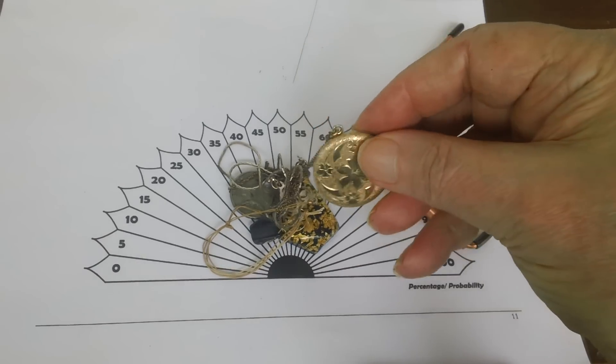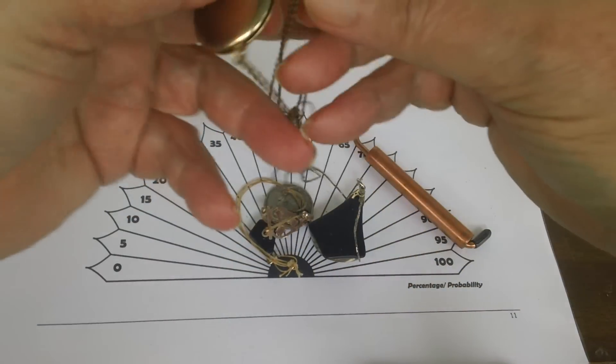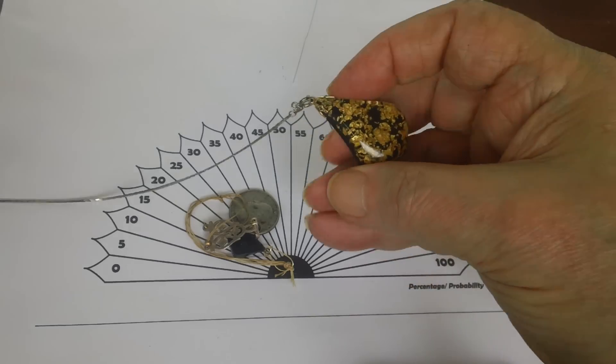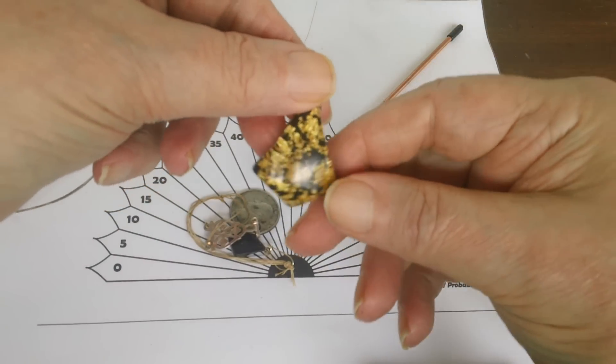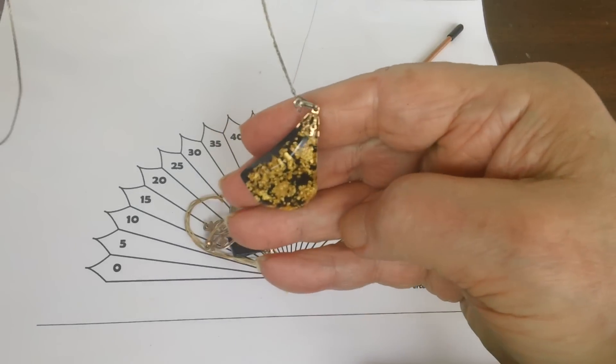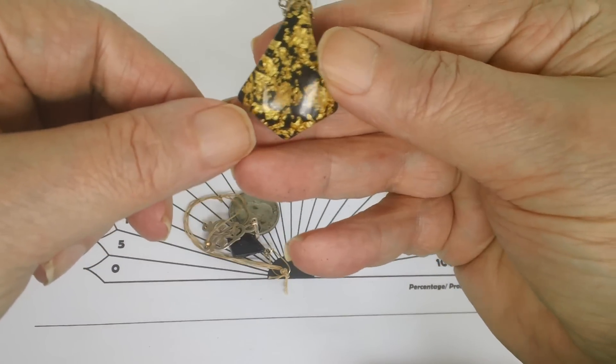This is a gold locket. This is a pendant with gold nuggets embedded in acrylic plastic.